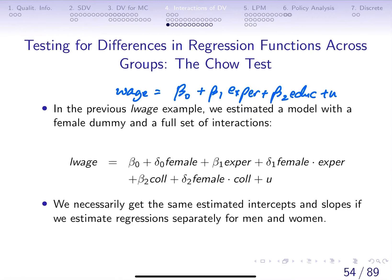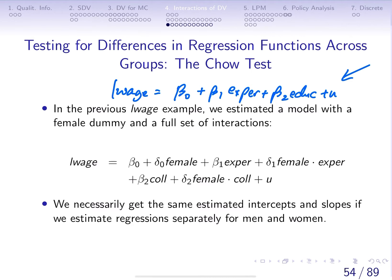In this video, we'll talk about how to test for differences in regression functions across groups and how to use the F-test or the Chow test to determine which model we should use. Earlier we've seen something like this where we have log wage regressed on experience and education. In this model, notice we don't make any distinction between males or females.